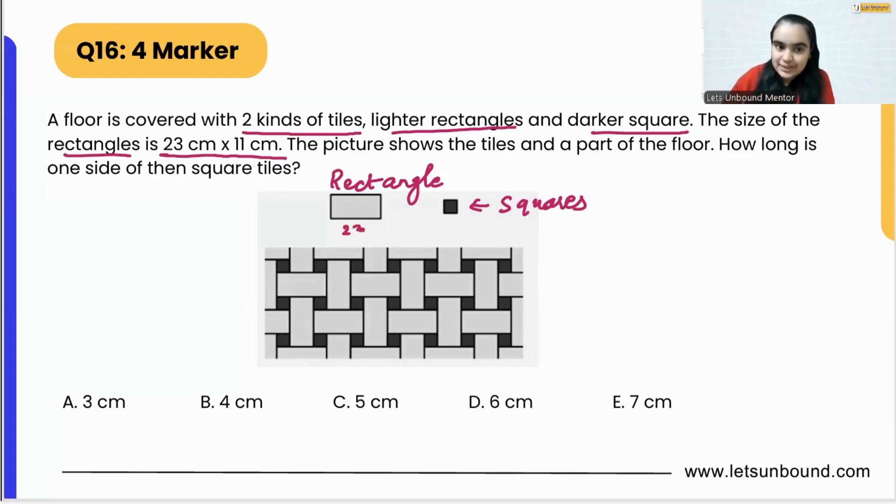The picture shows the tiles and a part of the floor. This is the flooring, this is how the floor looks like. All the tiles are arranged in this pattern. How long is one side of the square tiles? We need to find out the side of the square.